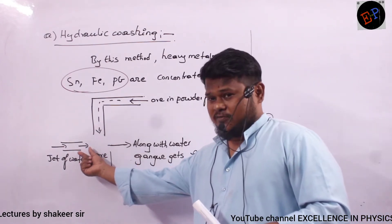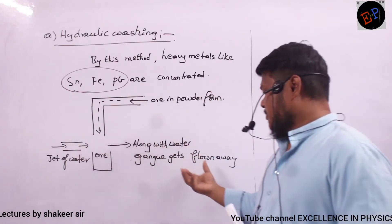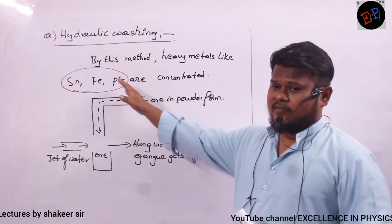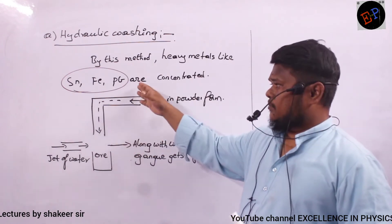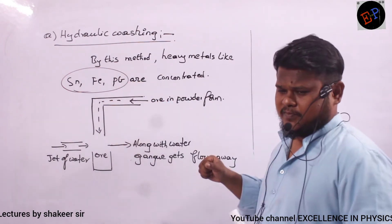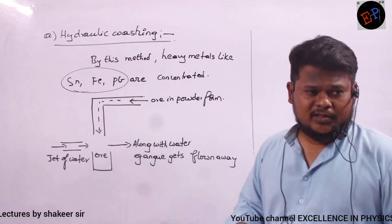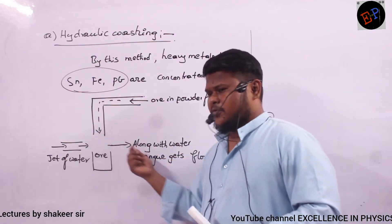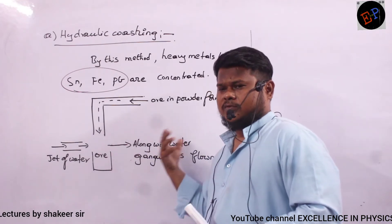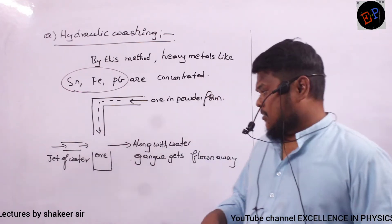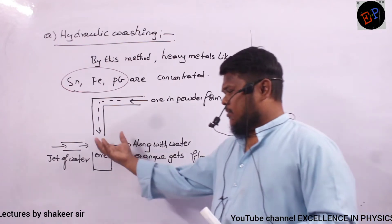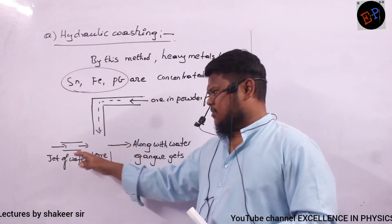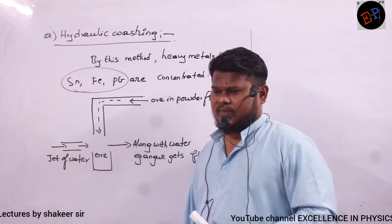The jet of water takes only lighter particles. Metals like iron, lead, and tin are very heavy, so they cannot flow away with water because their density is very large. The gangue flows away with water, while the concentrated ore is collected below. That is how we set the speed of the water.